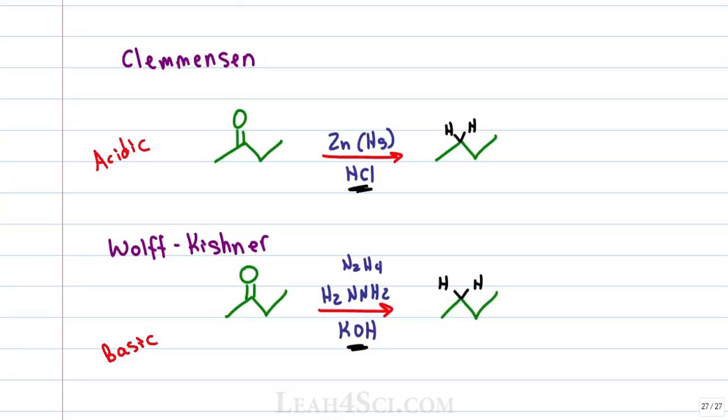Once you understand the reaction you need a quick way to come up with the products. If you see a carbonyl like an aldehyde or a ketone reacting under conditions of ZnHg in an acid catalyst or hydrazine in a base catalyst, simply cut off the carbonyl and redraw your product exactly as you see it, meaning just redraw that carbon chain.